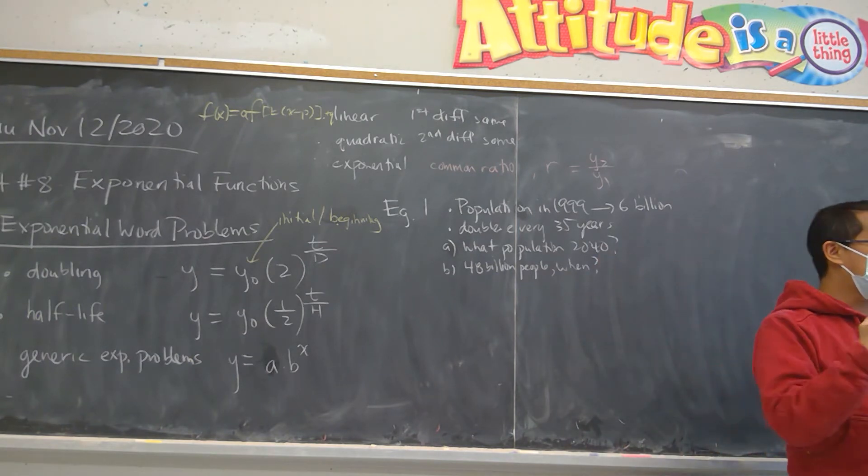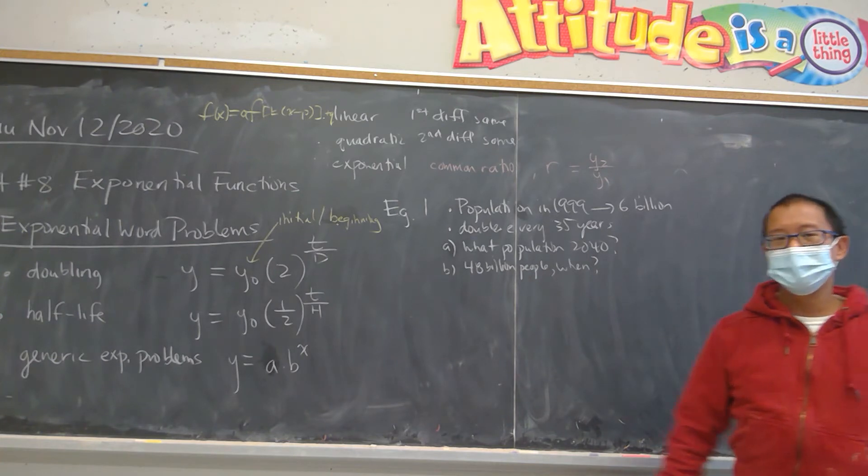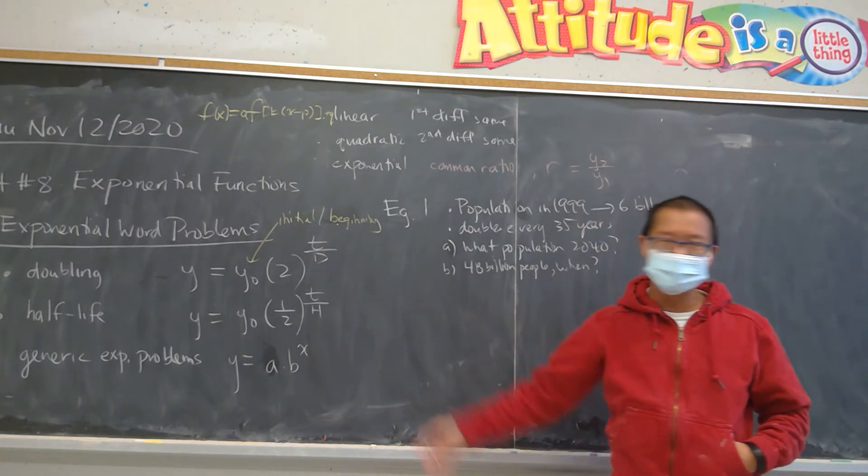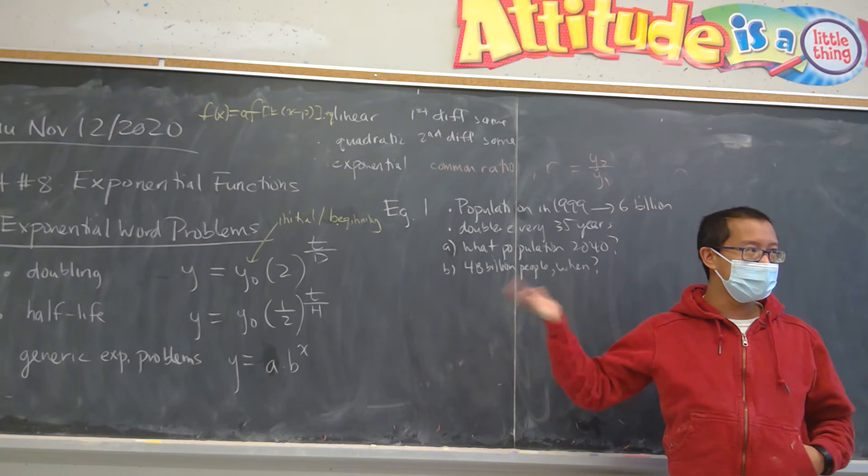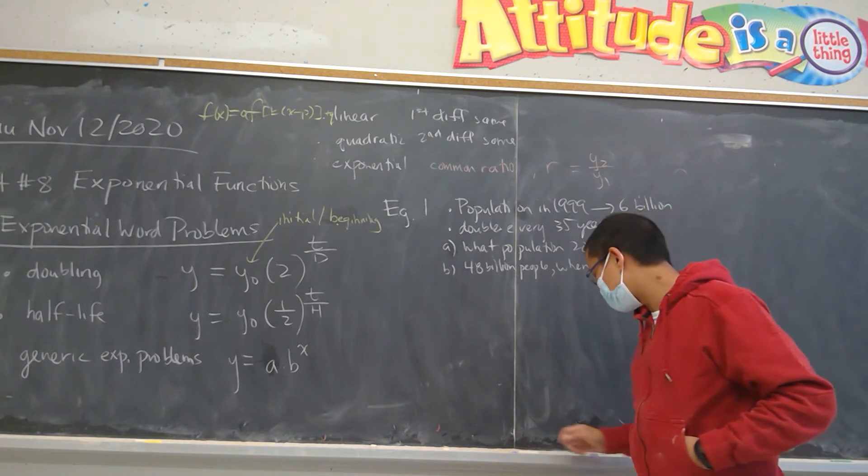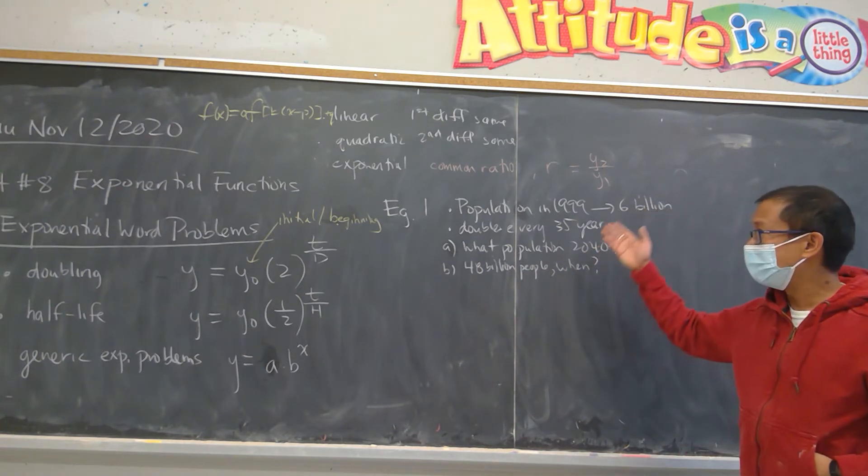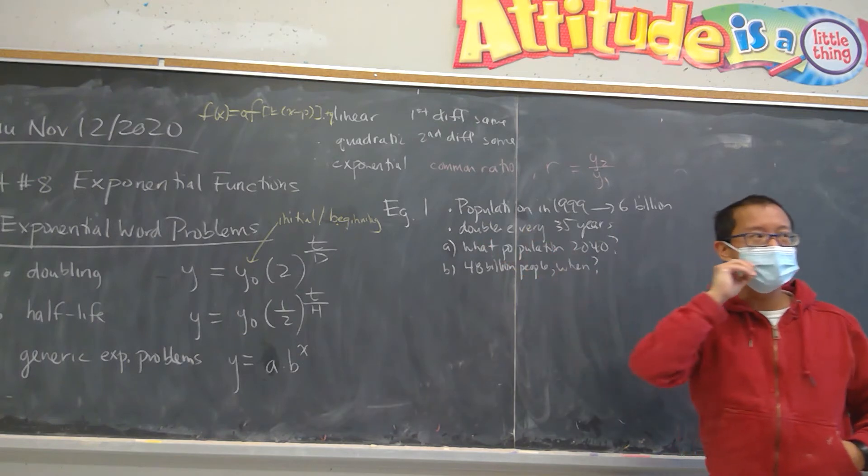So the first aspect when you're looking at these types of questions is identify what kind of word problem it is. And as you can see from the three equations, this is clearly a doubling question. So how do we set this up? Really straight forward. Notice y-naught stands for the initial or the beginning?